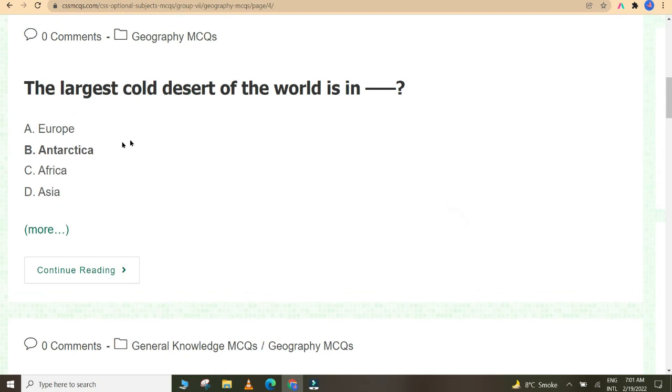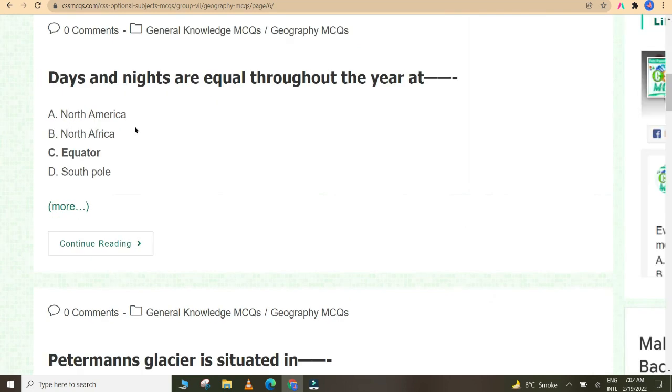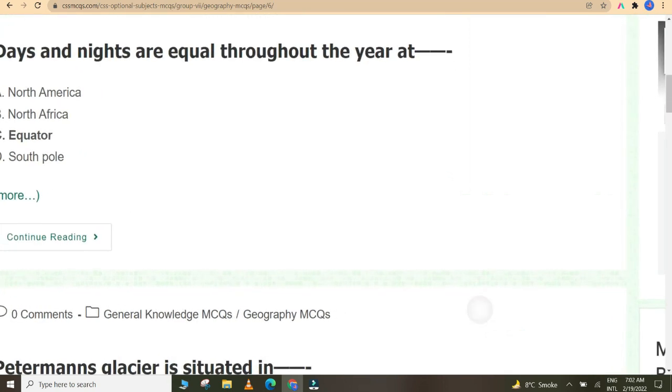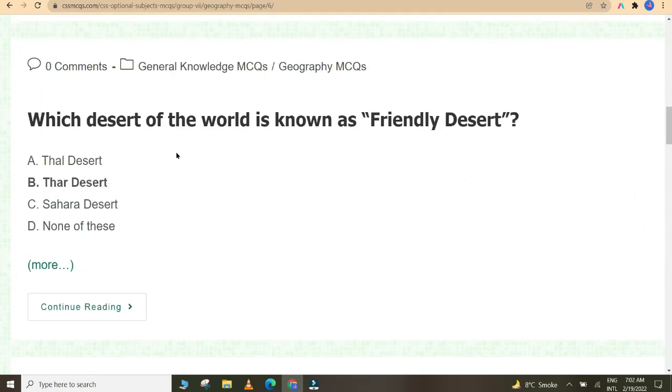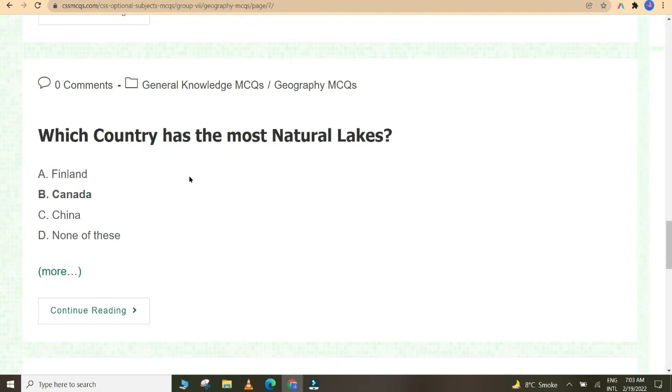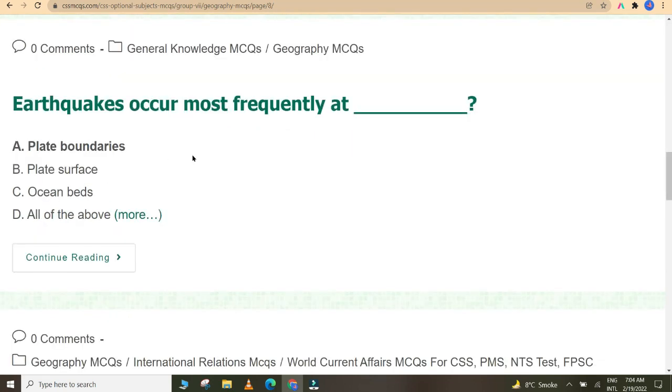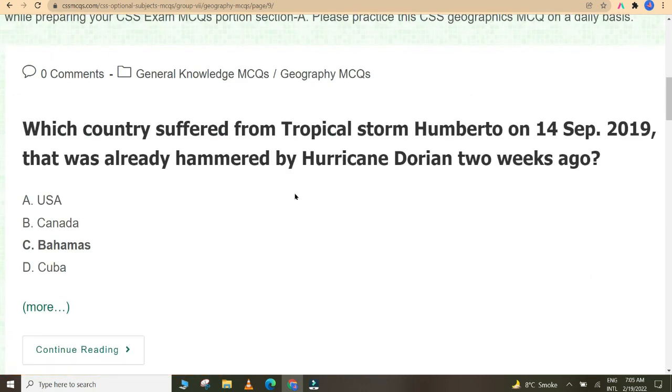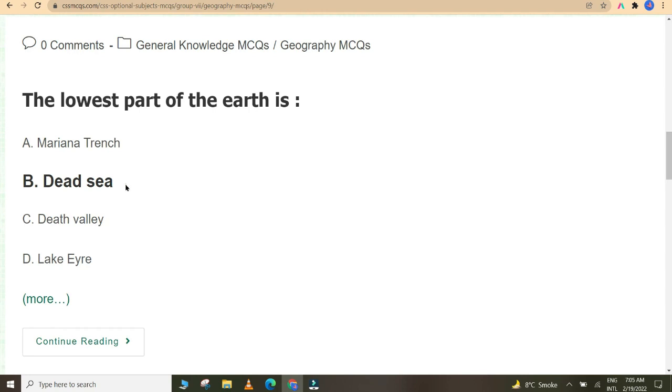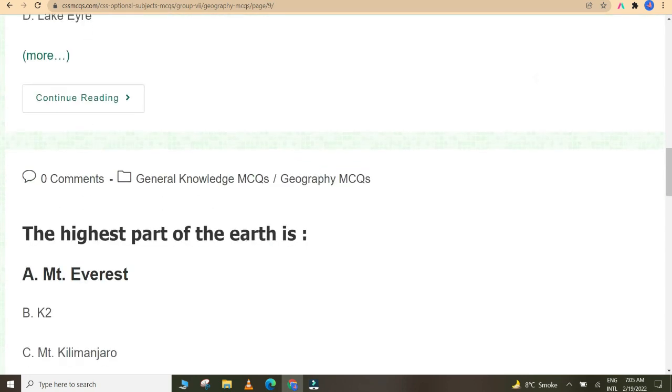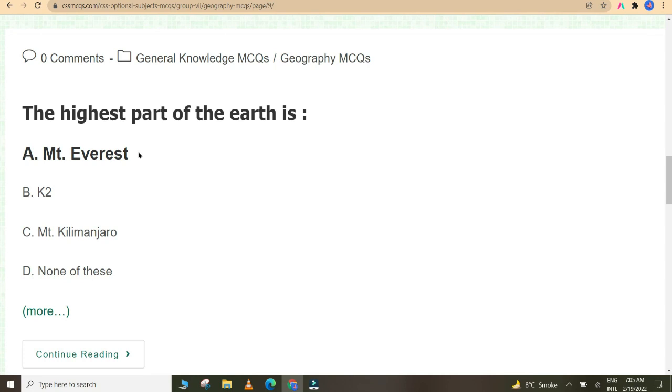The largest cold desert of the world is in Antarctica. Days and nights are equal throughout the year at equator. Which desert of the world is known as friendly desert? Thar desert. Which country has the most natural lakes? Canada. Earthquakes occur most frequently at plate boundaries. Which country suffered from tropical storm Humberto on 14 September 2019 that was already hammered by hurricane Dorian two weeks ago? Bahamas. The lowest part of the earth is Dead Sea. The highest part of the earth is Mount Everest.